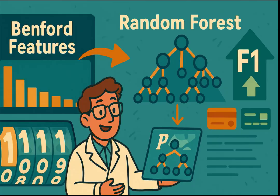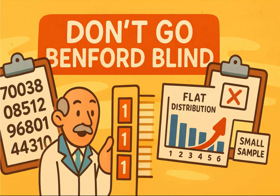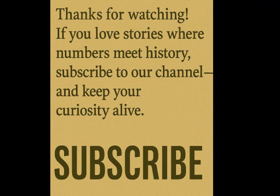But don't go Benford blind. Any dataset with artificial minimums or fixed widths — think postal codes, product IDs, or test scores out of 100 — will flunk the law. Small samples hurt too. If you love stories where numbers meet history, subscribe to our channel and keep your curiosity alive.